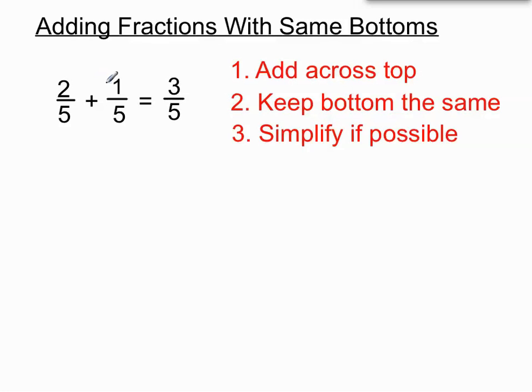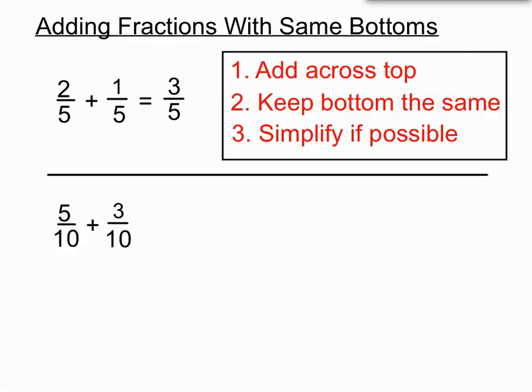So we add it across the top. We kept the bottoms the same and we saw that we couldn't quite simplify it any further downwards. So we're done there. That's the rules. Add across the top. Keep the bottoms the same. And simplify if you can.